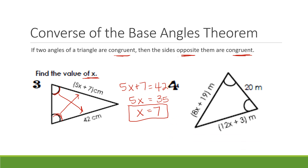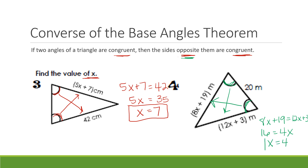Let's try another example. Again, we're given that these two base angles are congruent, and if the two base angles are congruent, then the sides opposite them are also congruent. So I get 8x + 19 = 12x + 3. Solving this, I get 16 = 4x, so x = 4. Since we're only finding the value of x, I can stop there.